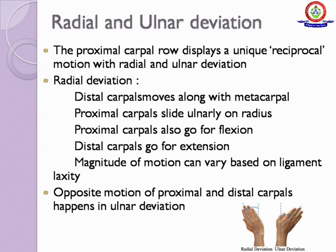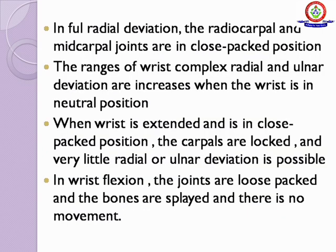Radial and ulnar deviation: the proximal carpal row displays a unique reciprocal motion with radial and ulnar deviation. During radial deviation, the distal carpals move along with the metacarpals, the proximal carpals slide ulnarly on the radius, the proximal carpals also go into flexion, and the distal carpals go into extension. The magnitude of motion can vary based on ligament laxity. The opposite motion of proximal and distal carpals happens in ulnar deviation. In full radial deviation, the radiocarpal and midcarpal joints are in closed pack position.